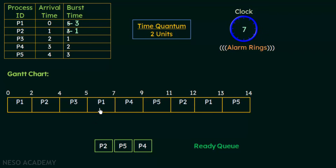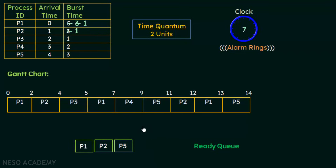When P1 is preempted at time 7, it had a remaining burst time of 3 units but executed for only 2, leaving 1 unit remaining. P1 is placed at the end of the ready queue. P4 is removed from the ready queue and begins its execution. The burst time of P4 is 2 units.